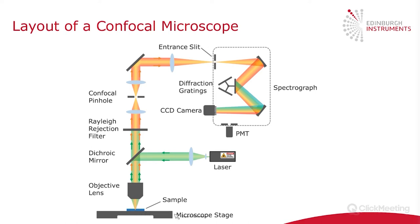The microscope stage can be moved in the X, Y, and Z direction, where Z is the vertical axis. The excitation either creates photoluminescence or Raman, depending on what you want to look at, which is then reflected from the sample and collected by the objective lens in a reflection, or epi, configuration. This photoluminescence or Raman then passes up through the dichroic mirror and through a rejection filter, which blocks the laser wavelength. The signal is then focused down through a pinhole, which is the defining feature of a confocal microscope.